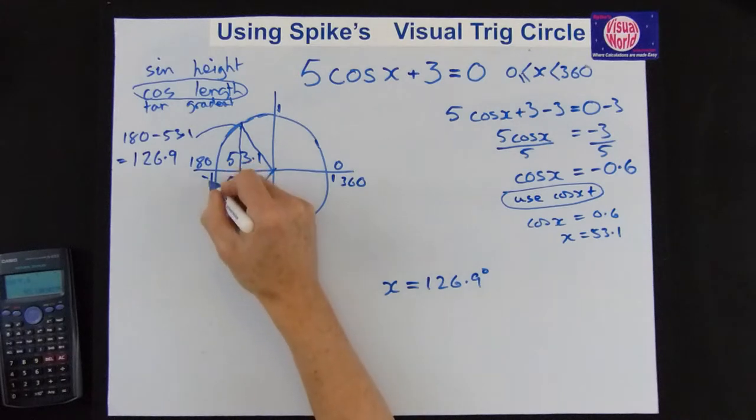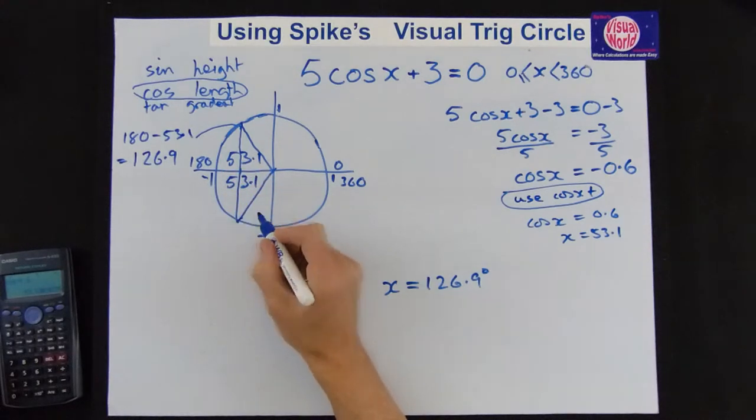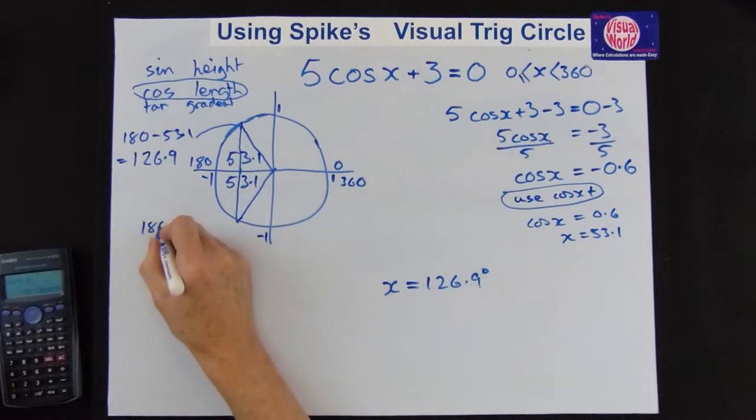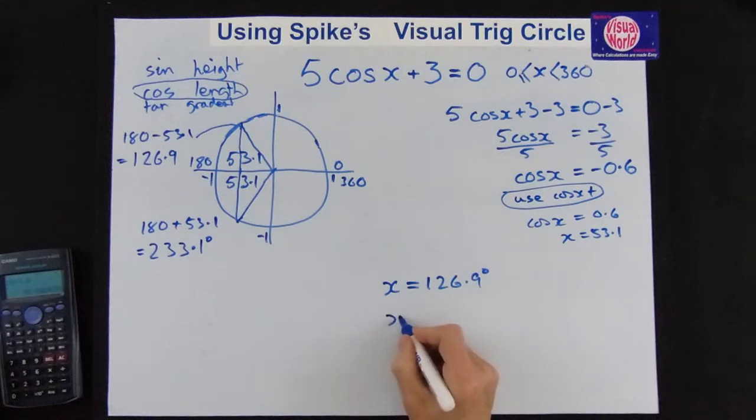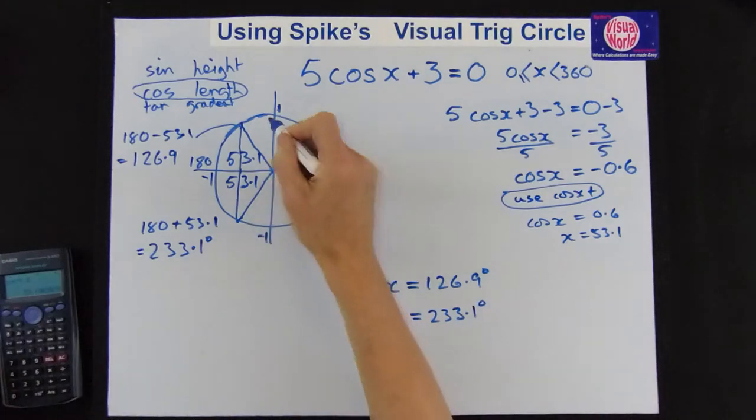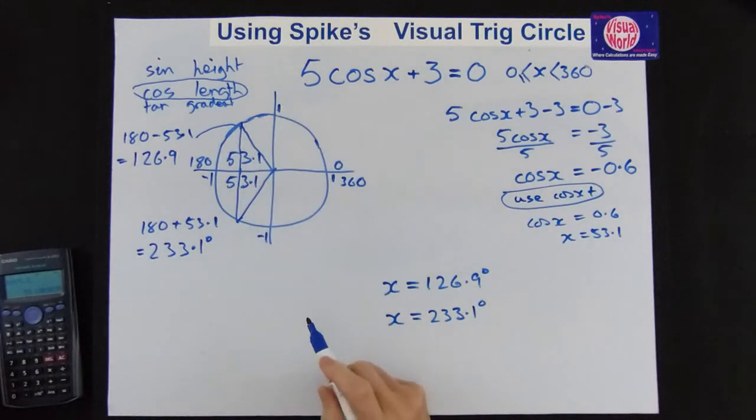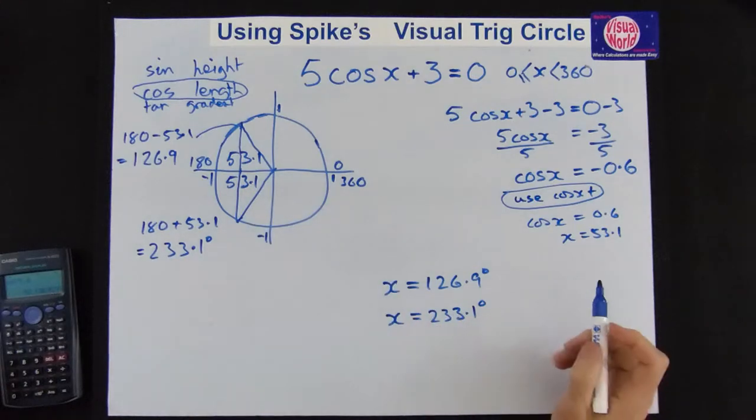And the other one is past the 180. So we're going 180, add on 53.1. So we get 233.1 degrees. So our other answer is x equals 233.1 degrees. So it's easy to see exactly where we're getting our answers. There's no messing around.